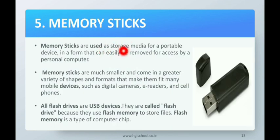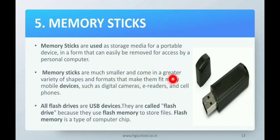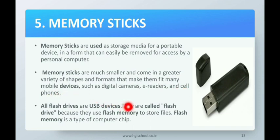Memory sticks are used as storage media for portable devices in a form that can easily be removed for access by a personal computer. They are very small in size and come in a variety of shapes and formats that make them fit many mobile devices such as digital cameras, e-readers, and cell phones. All flash drives are USB devices — they are called flash drives because they use flash memory to store files. Flash memory is a type of computer chip.